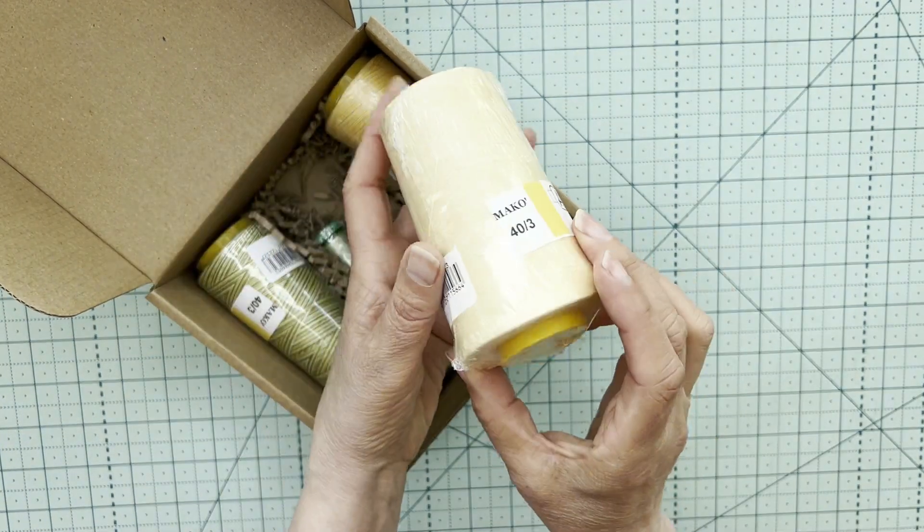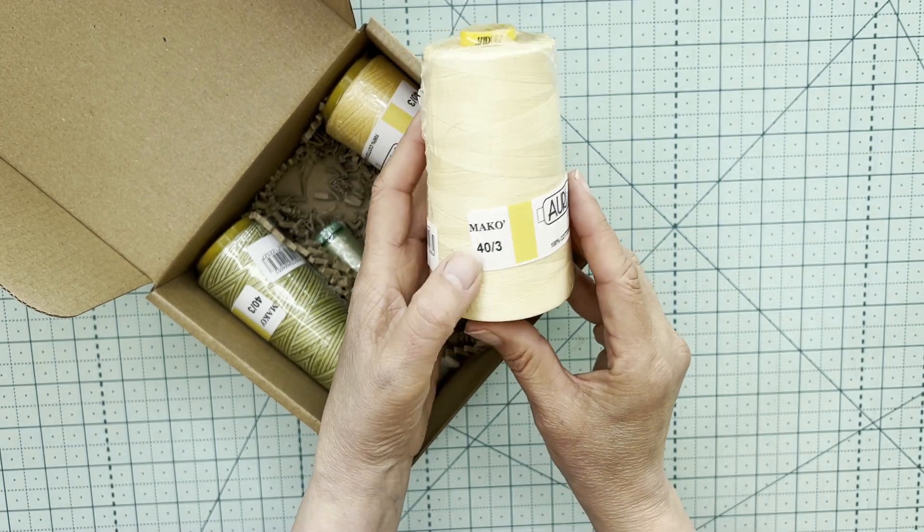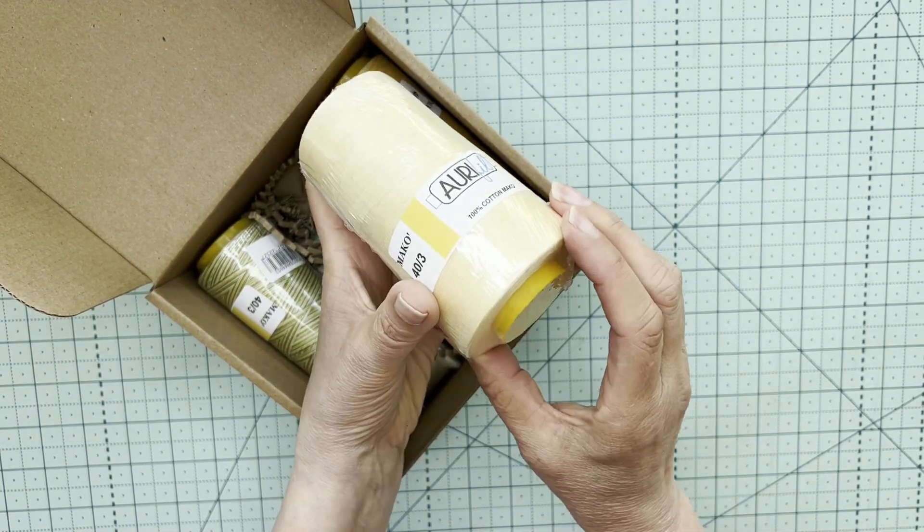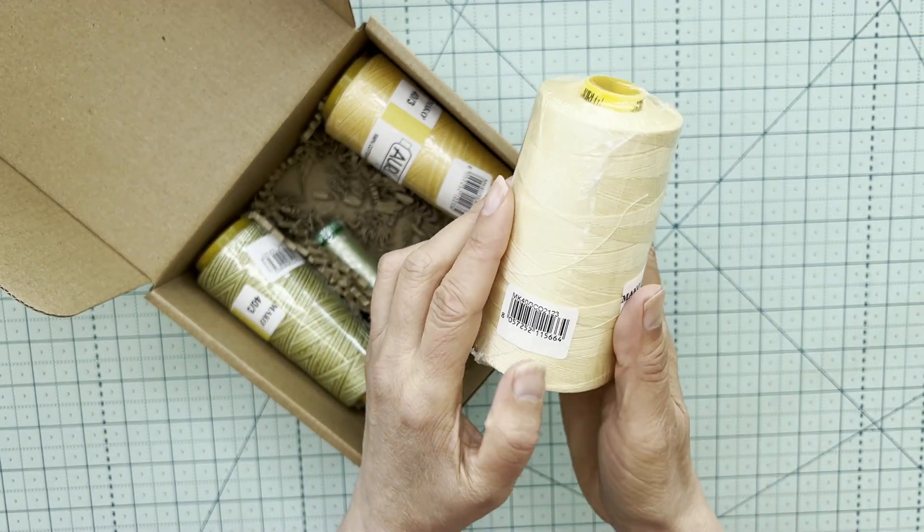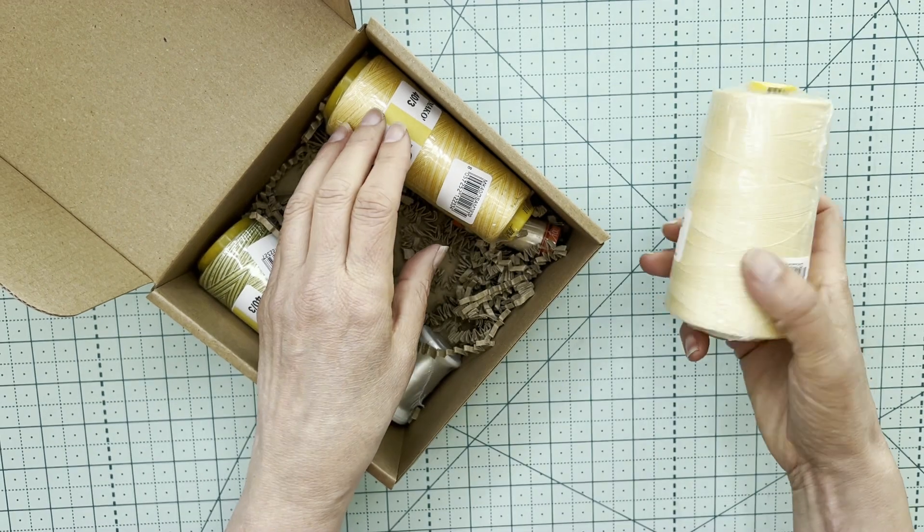So this is a full cone of what colour is it? 2123. The colours are on the inside and that is a very, very pretty pale yellow.